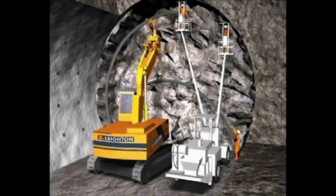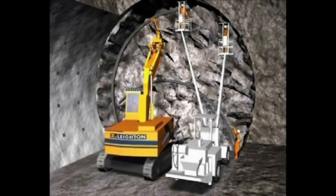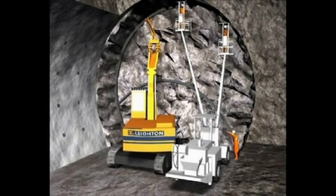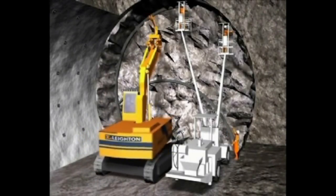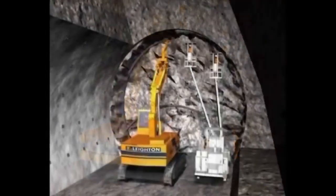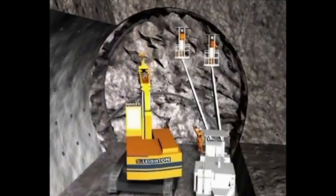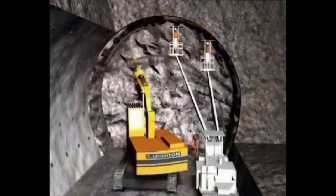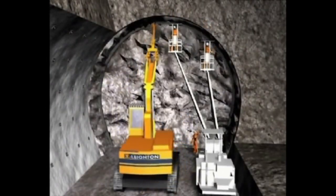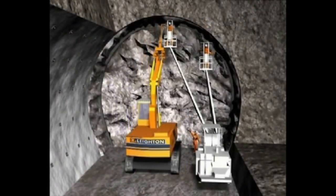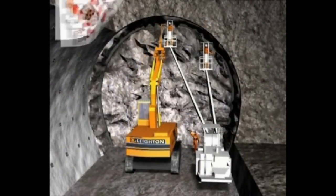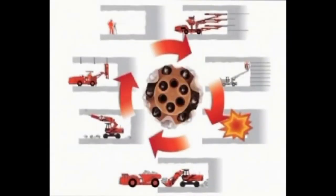In poor ground conditions, the primary lining includes sprayed concrete, meshes, rock bolts, and lattice girders for weaker areas. Utilization of support measures depends on the excavation and support classes. Lattice arches are erected to support the weak rock mass.